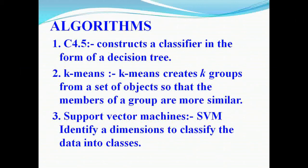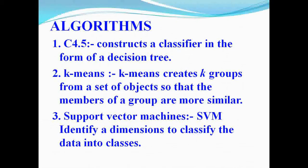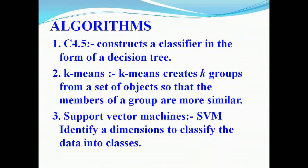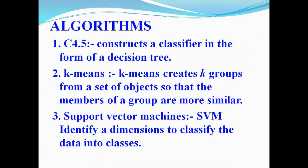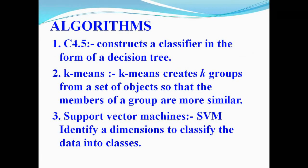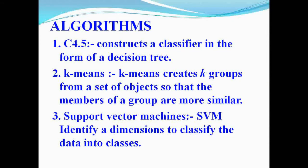K-Means creates K groups where members of a group are more similar. Similar kinds of things are grouped into one object — these different groups are clusters. A cluster is where similar kinds of documents are placed into one group — similar related things are placed into one cluster.